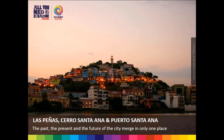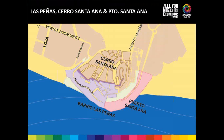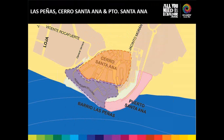Then we arrive at the famous Las Peñas, Cerro Santa Ana, and Puerto Santa Ana — fantastic areas where older and newer sections of town blend together. A map shows the distribution. It's worth walking all the way to the top of the lighthouse for a fantastic view of the city and the Guayaquil River. Las Peñas commemorates the older style of living. Ten to fifteen years ago that place was completely destroyed and in bad shape — but it has been totally renovated.